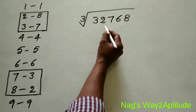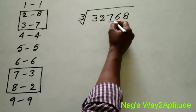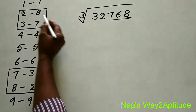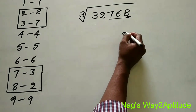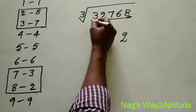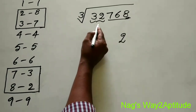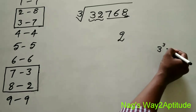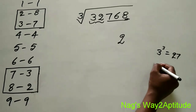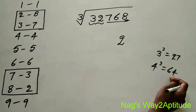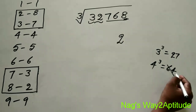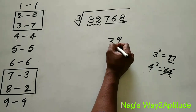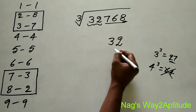Let's find the cube root of 32,768. Take the last 3 digits: 768. The last digit is 8 — since cube of 2 ends in 8, the units digit is 2. Now take the remaining 2 digits: 32. The nearest cube not over 32 — 3 cubed is 27, and 4 cubed is 64 which is over 32. So we take 3. Therefore the cube root of 32,768 is 32.